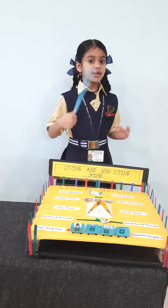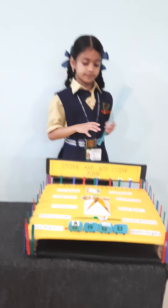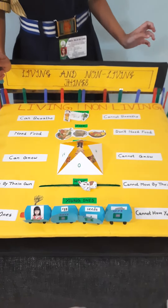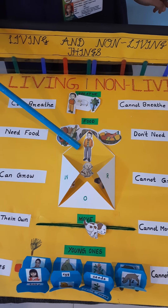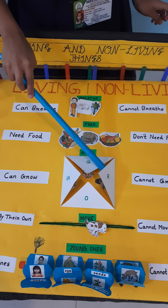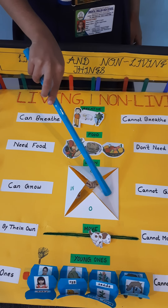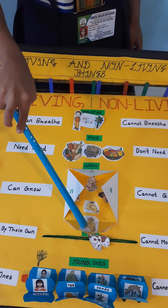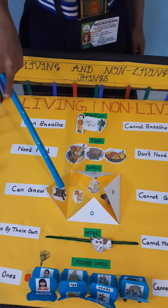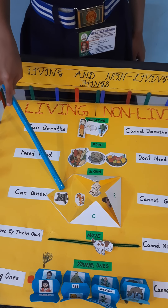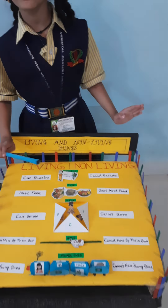Next one: grow. Living things can grow. For example, a baby grows into an adult. A plant grows into a tree. A chicken grows into a hen. And a kitten grows into a cat. But non-living things cannot grow.